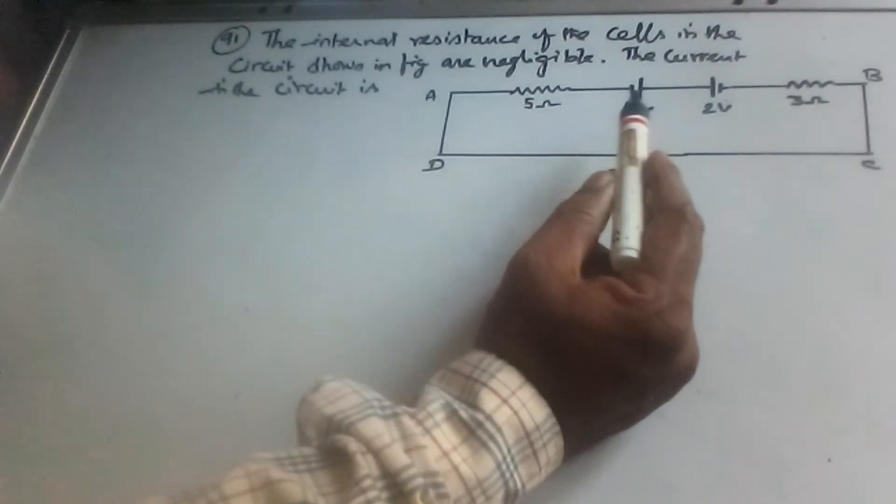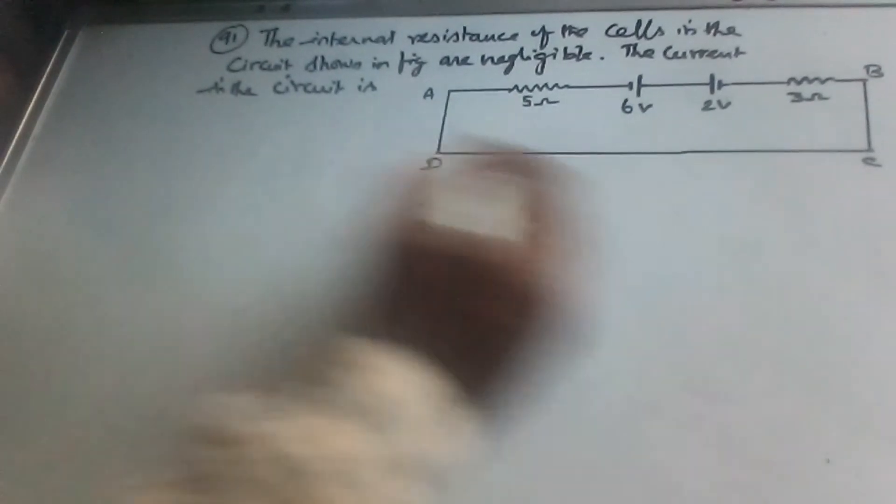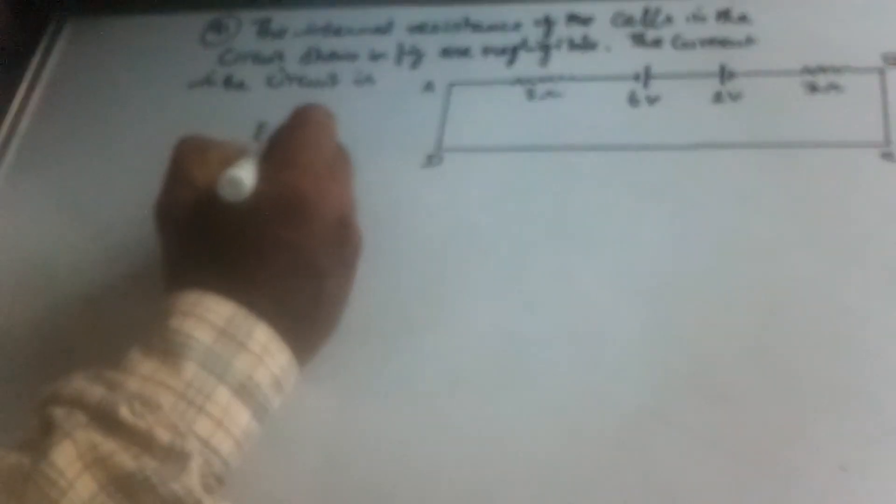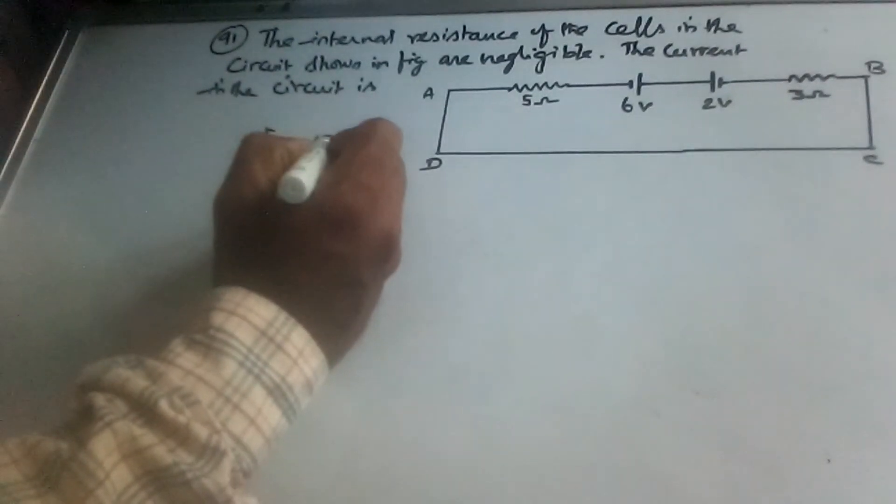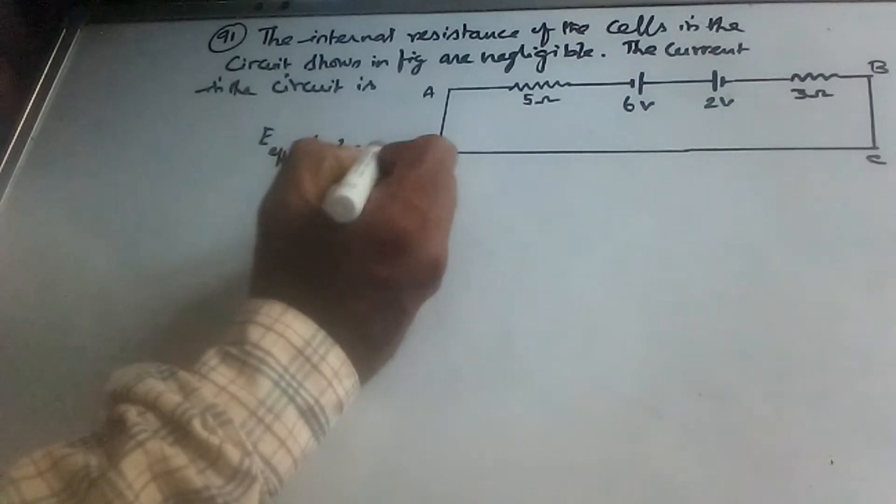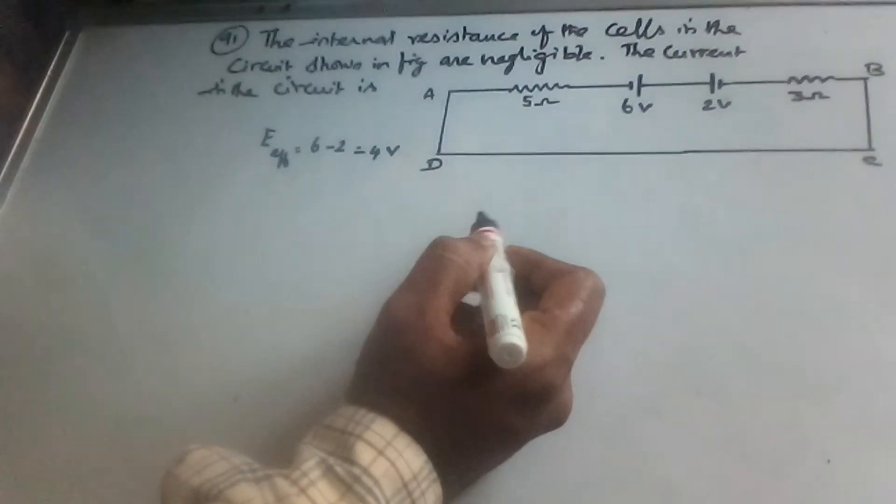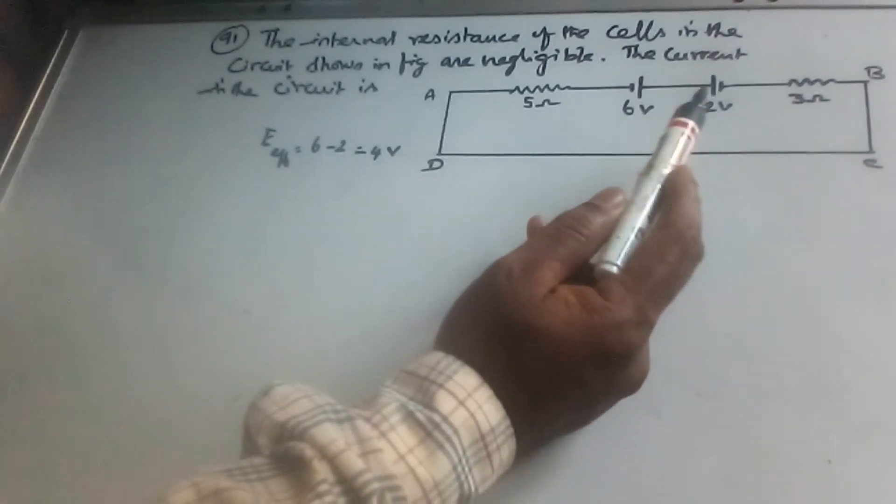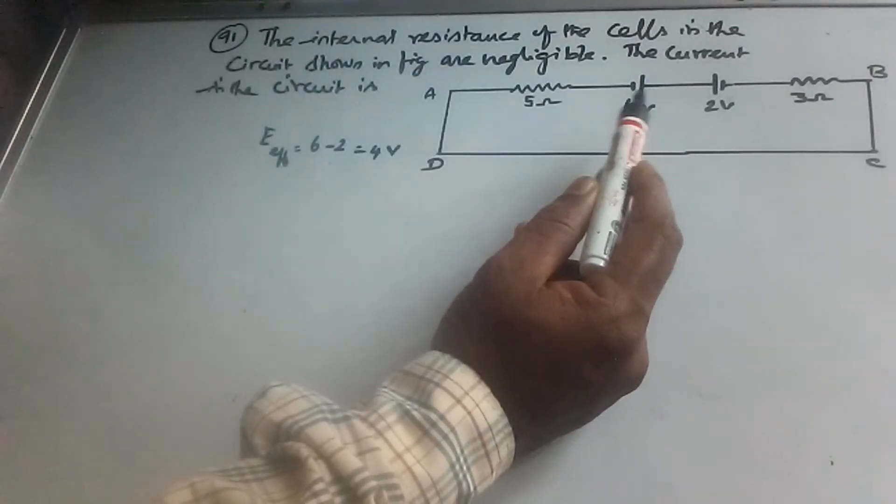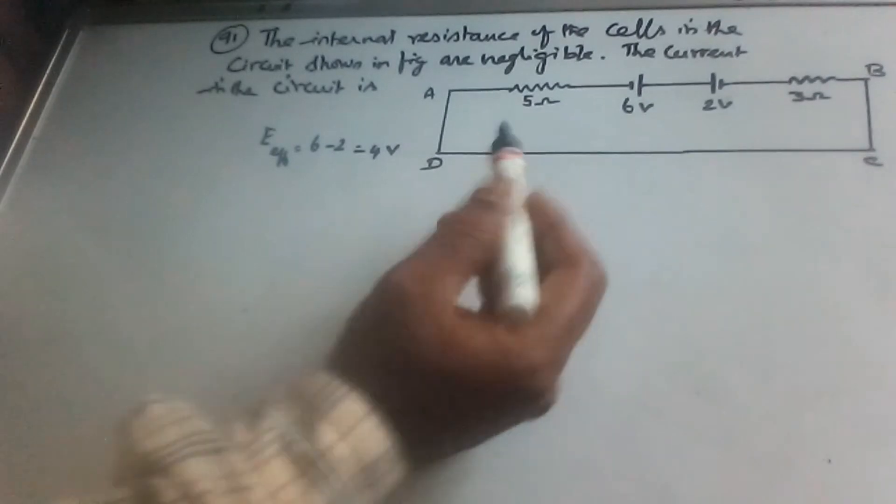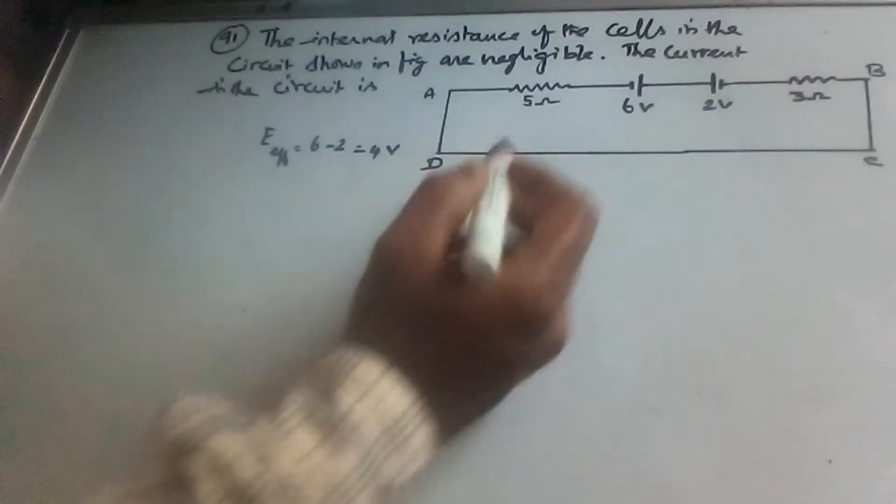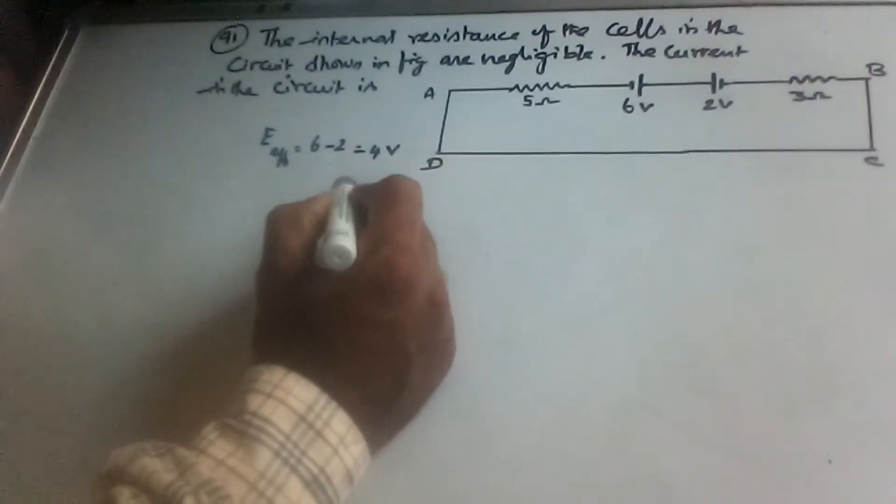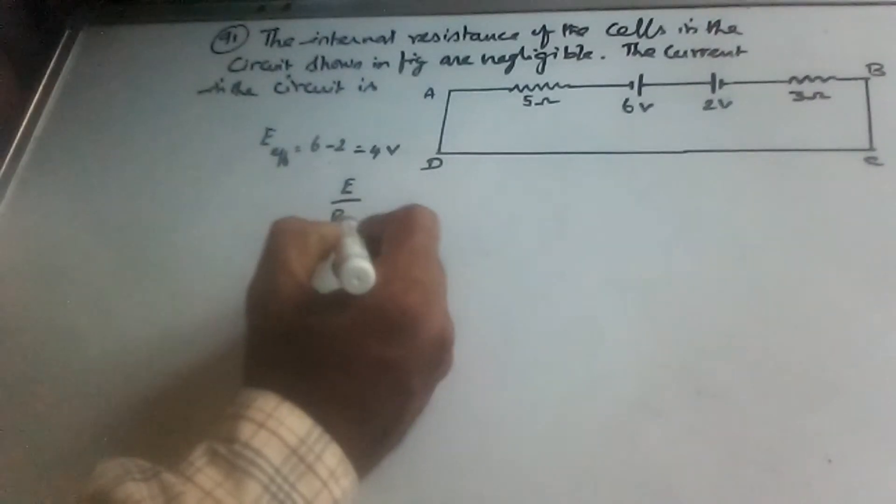Since the current is taken to flow from the positive to the negative terminal of the battery, the current equals E divided by the net effective resistance.